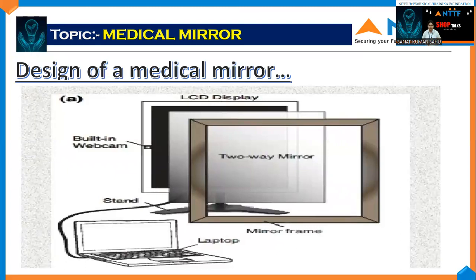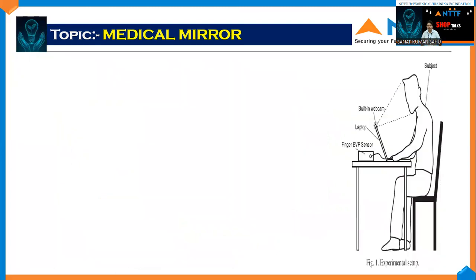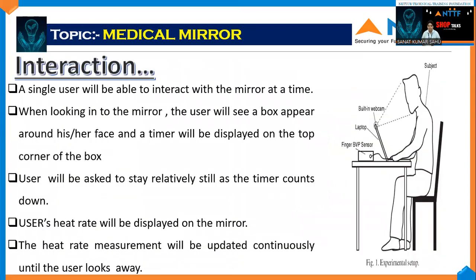The LCD display is connected to a laptop to analyze the software. Interaction means how a person interacts with the mirror. A single user will be able to interact with the mirror at a time. When looking at the mirror, the user will see a box appear around their face, like a normal camera when taking photos, and it is displayed on the top corner of the box. The user will be asked to stay relatively still as a timer counts down. The user's heart rate will be displayed on the mirror and updated continuously until the user looks away.